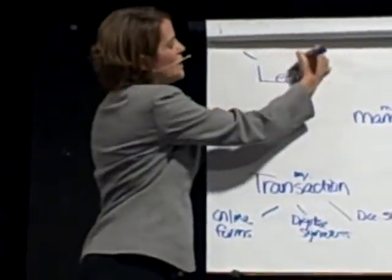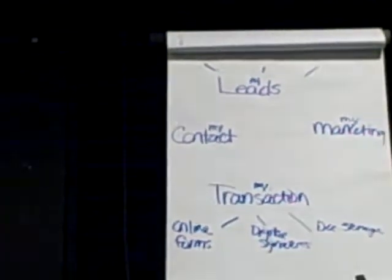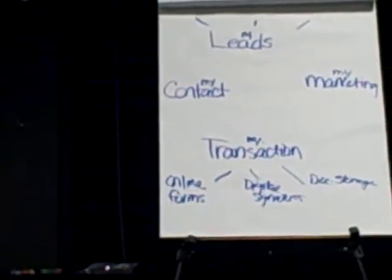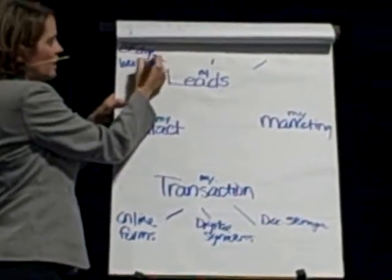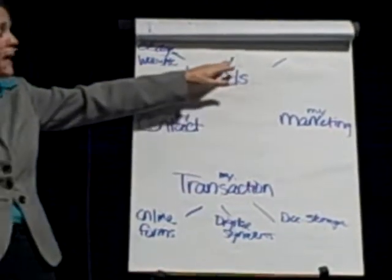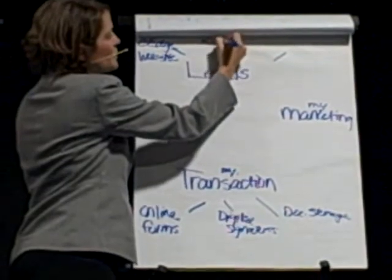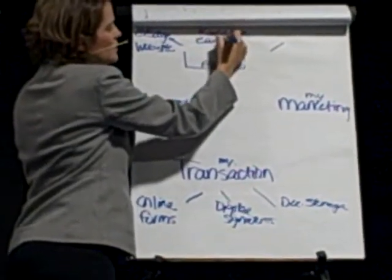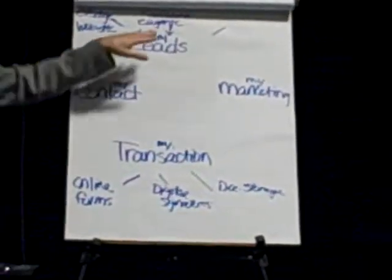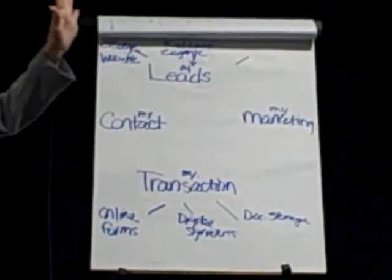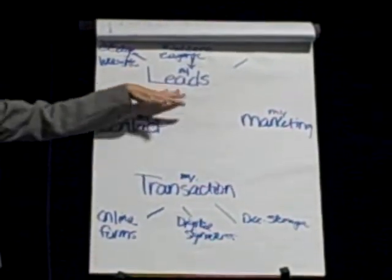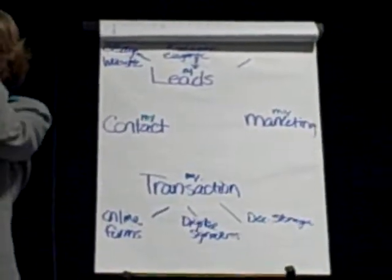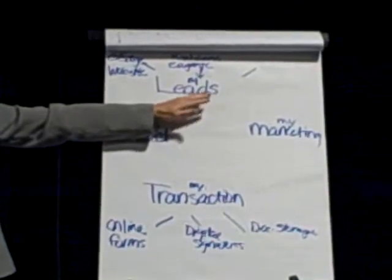Now let's go up here to My Leads. Leads are going to flow into the eEdge system from several different sources. The first and most obvious source is going to be the agent's eEdge website. So if the consumer hits the website, they make an inquiry, that lead is going to flow into the eEdge lead manager. The second place leads are going to flow in from are anything related to kw.com and the agent's e-agency website. That e-agency website is not going away — we just now have an additional tool.